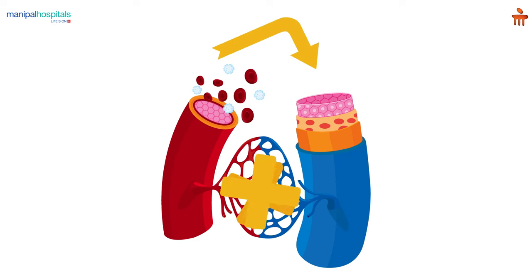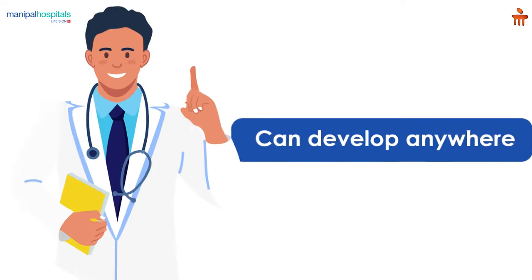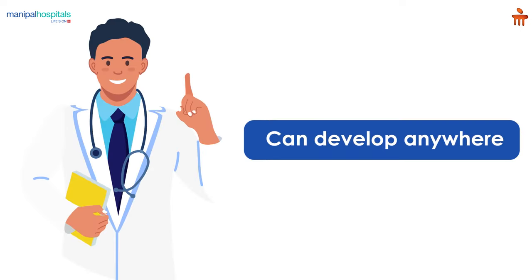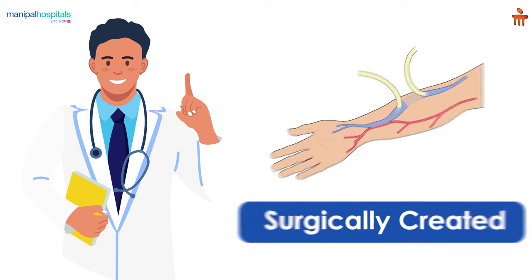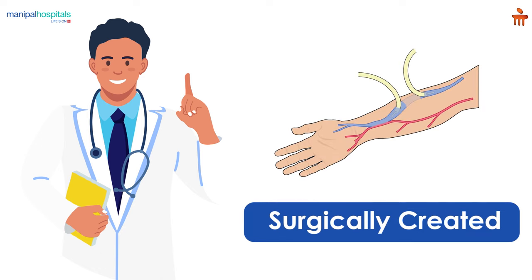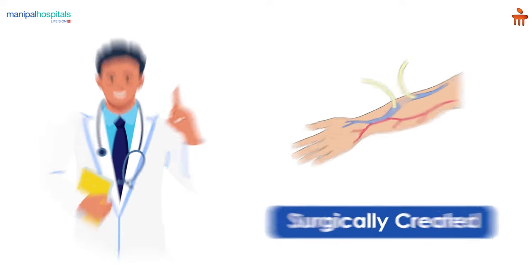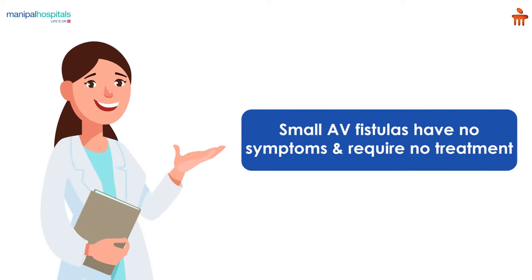By bypassing some capillaries, AV fistulas can develop anywhere in the body, and they are also often surgically created for use in dialysis in people with severe kidney disease. Small arteriovenous fistulas often won't have any symptoms and usually don't need treatment.